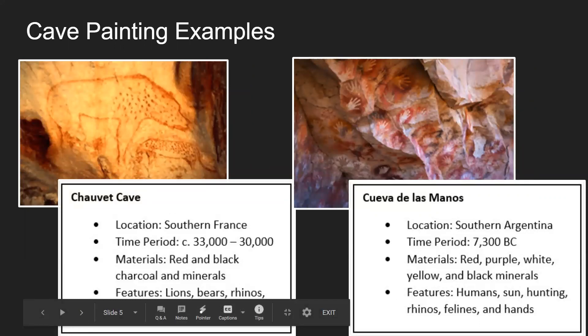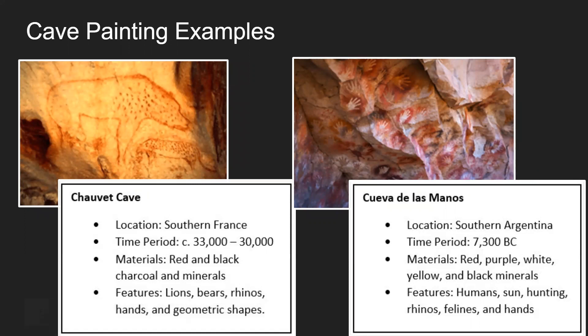Another well-known one is the Chabot cave, located in southern France. The period is circa 33,000 to 30,000 years old. Materials are simply red and black — charcoal and minerals. They probably didn't have as diverse resources in that area, so they used what was available. The subjects depend on the region: they had lines, bears, rhinos, hands, and geometric shapes. Geometric shapes often involve straight lines to create distinct forms in their art.